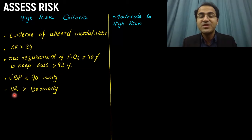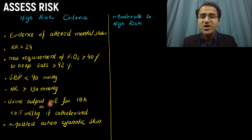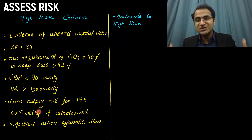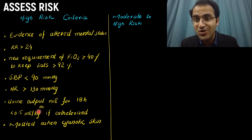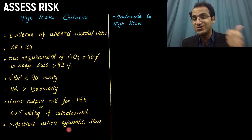Additional high risk criteria include: heart rate greater than 130 beats per minute; urine output nil for 18 hours, or less than 0.5 ml per kg per hour if catheterized — urine output is very low because kidney perfusion is low due to low blood pressure and shock; and mottled, ashen, or cyanotic skin as shown in the picture.